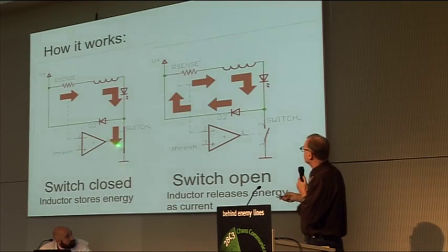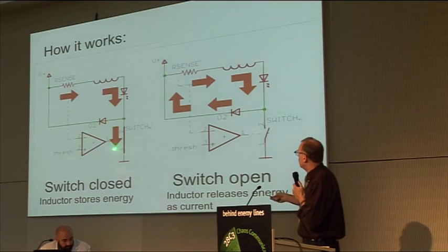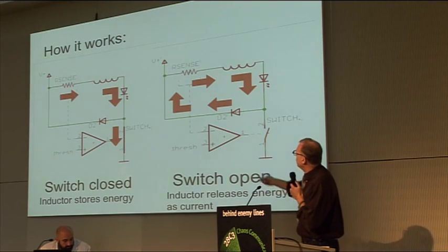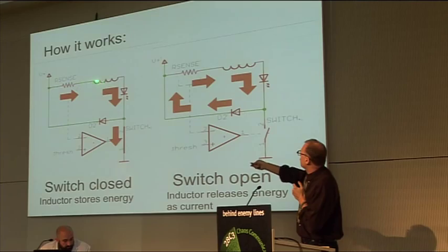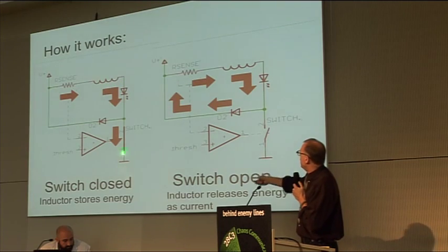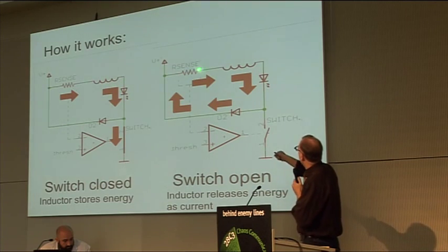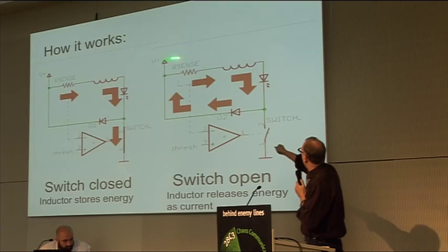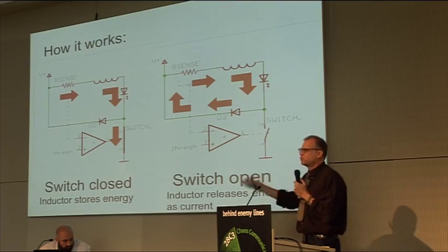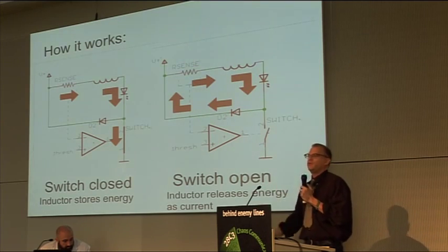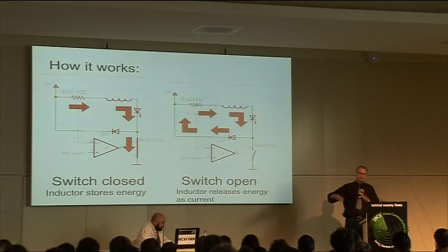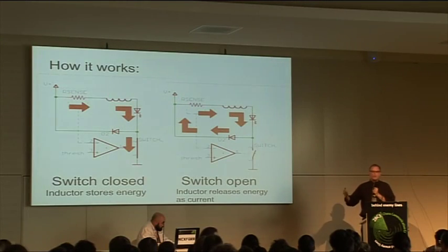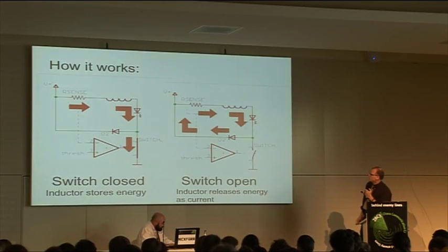Okay, so there's a switch here, and that switch can either be closed or open. When it's closed, the current comes from the power source down through the inductor, through the LED, and into ground. Okay, and when it's open, this diode kind of recirculates it. Now, inductors are kind of like flywheels for current. They like to keep a constant current going. They store energy in the magnetic field.